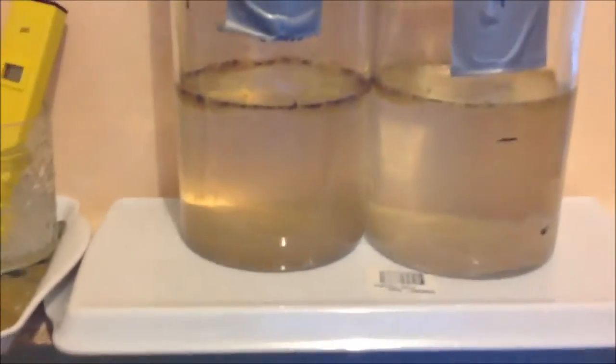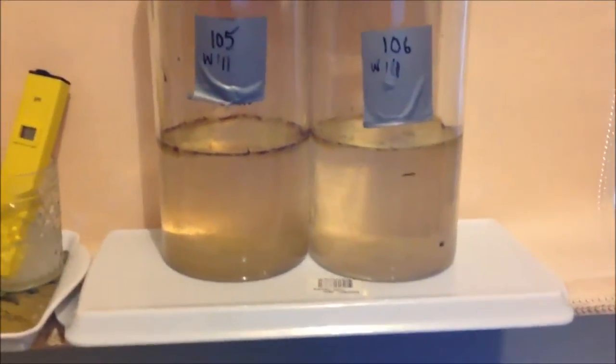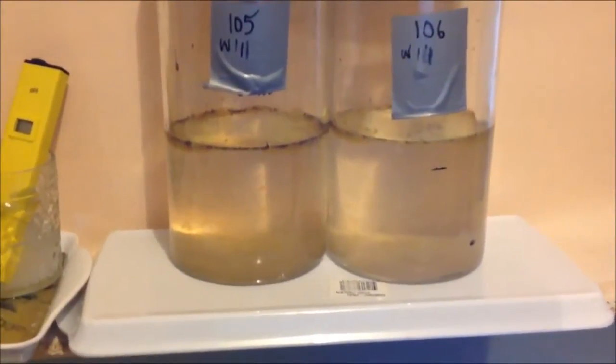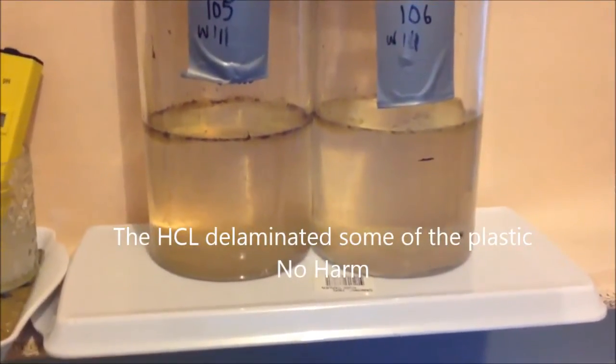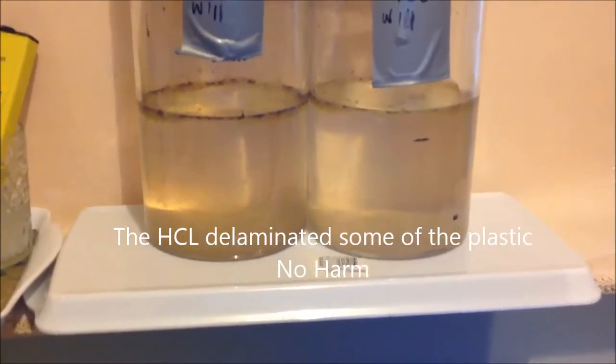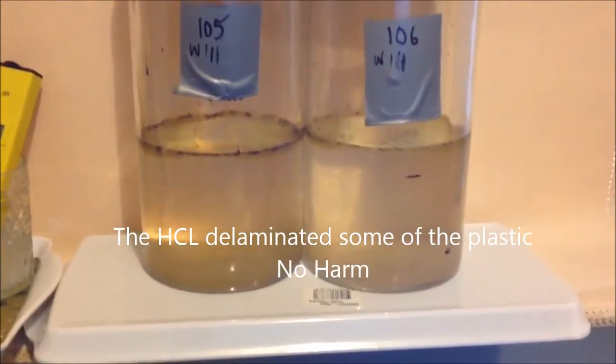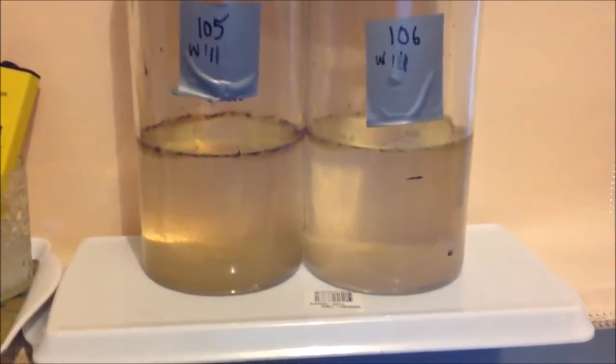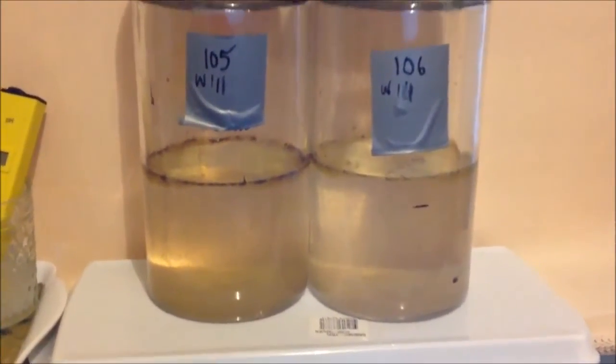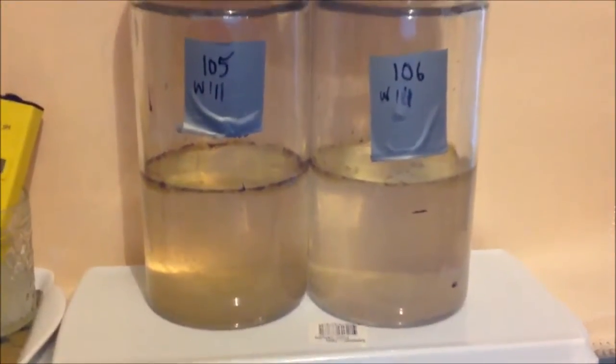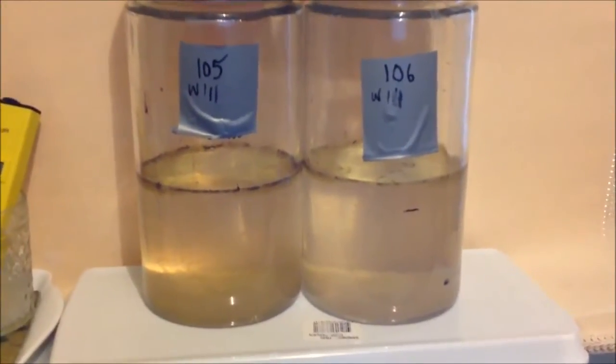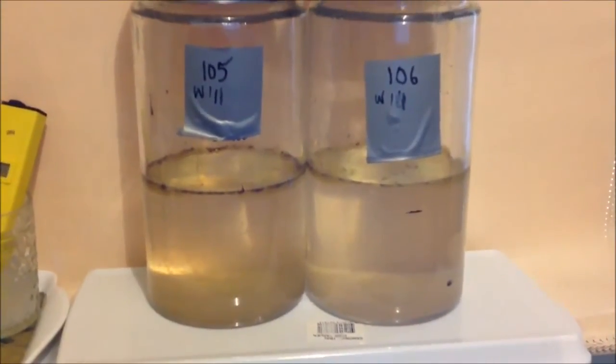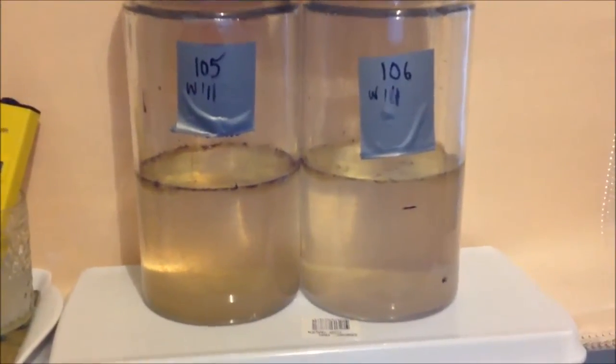And here's the solution. You might be able to see that 105 is slightly darker than 106. So I'm expecting there to be more sediment in 105. In fact a lot of the sediment in 106 could be a little bit of contamination from the stirrer. So I'll let that settle out.